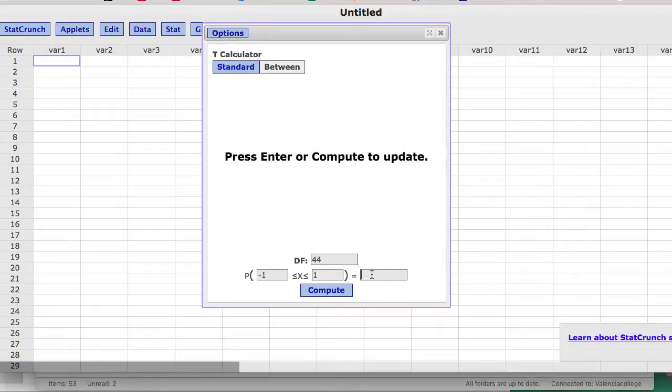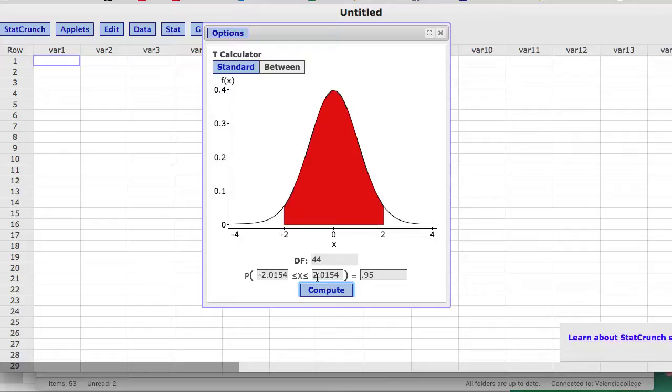And let's say I want 95% confidence. So I'm going to type 0.95 over here in the probability. And then when I click Compute, it's going to give me those critical values where 95% of the data lies between for a sample size of 45. So we have 44 degrees of freedom.